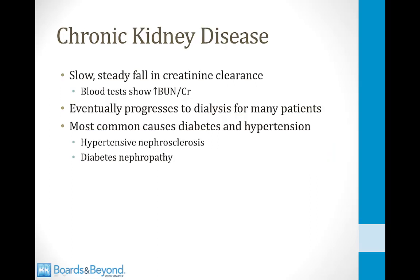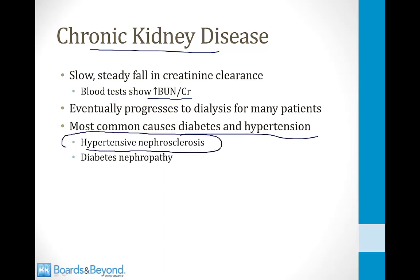Chronic kidney disease is a slow, steady fall in creatinine clearance with a steady rise in BUN and creatinine over time. It eventually progresses to dialysis for many patients, and the most common causes are diabetes and hypertension.